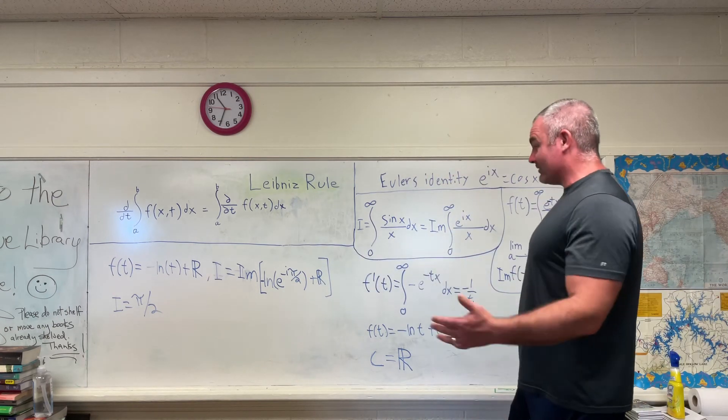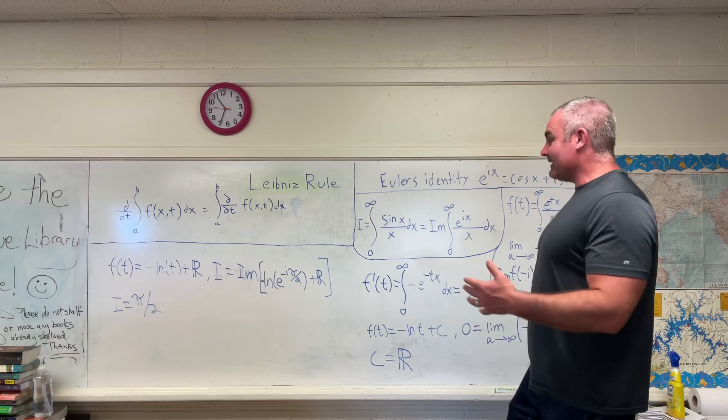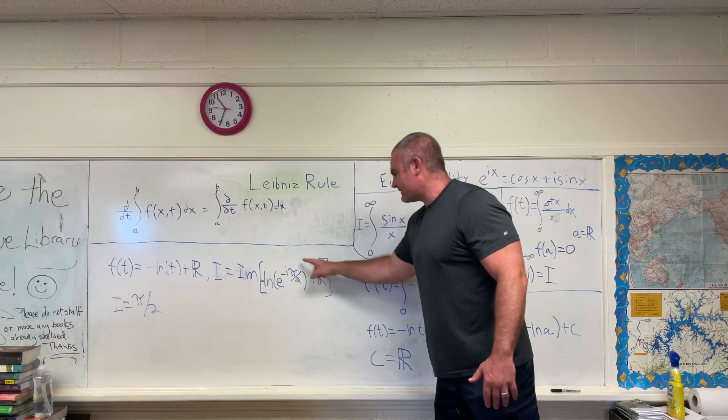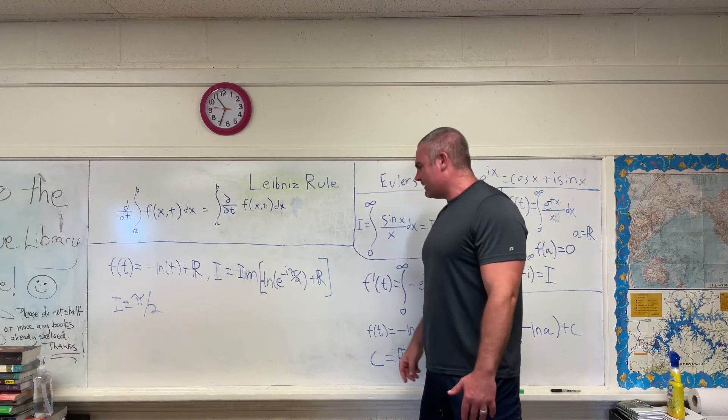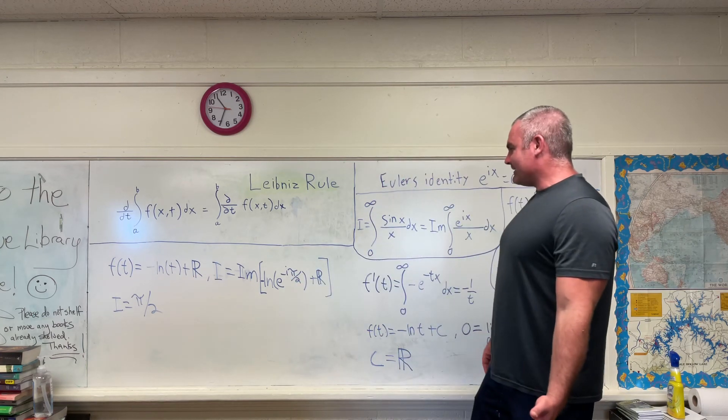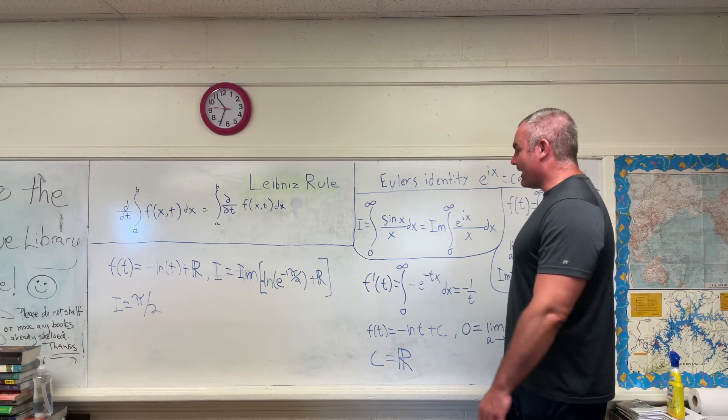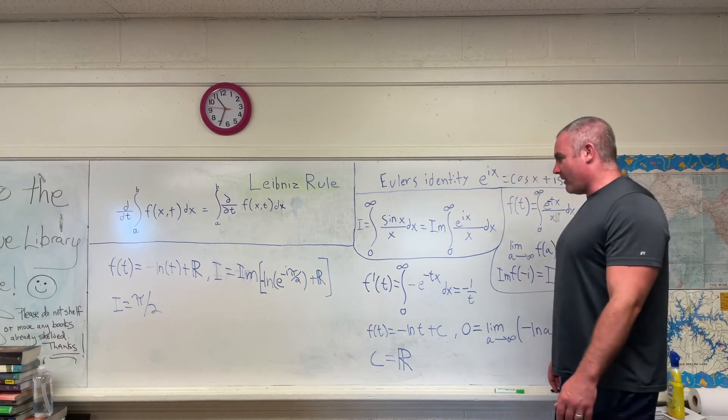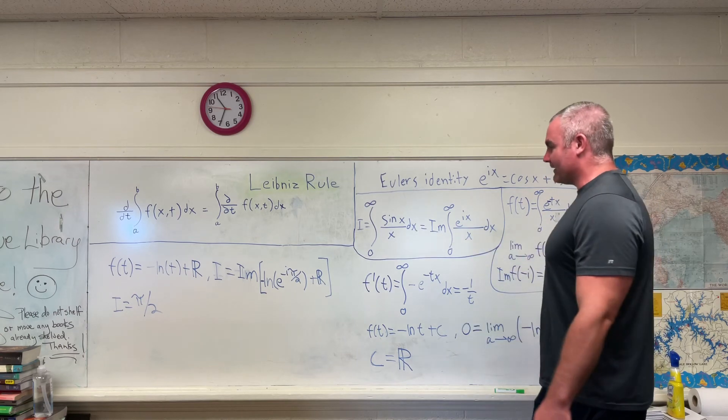i is equal to the imaginary part of the negative natural log of negative i. And I wrote negative i in its exponential form right there. Negative i is equal to e to the negative i pi over 2. You need to know a little bit about complex numbers. I'm not going to explain why that's true, but it is.